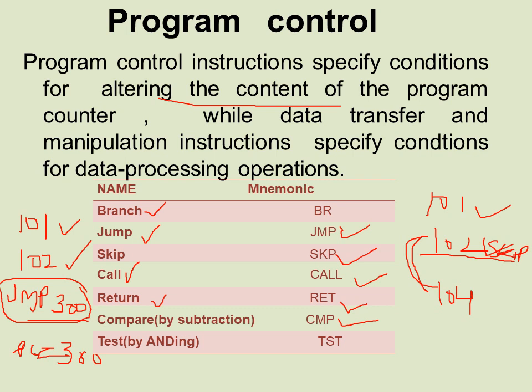In the jump example, instructions are at addresses 101, 102, and 103. If we jump, the program runs from address 300, skipping instructions at 102 and 103. Those instructions will not run because we have jumped over them.